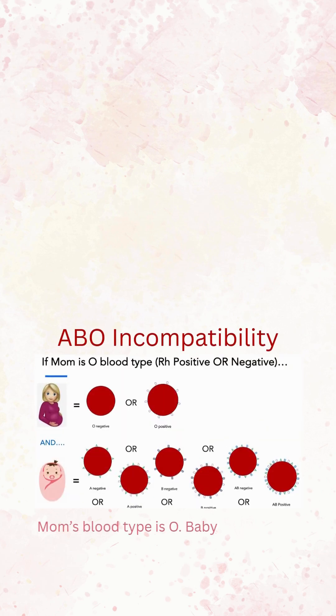With ABO incompatibility, mom's blood type is O. The baby's blood type can be anything other than O — A, B, or AB — and this is going to be true for either RH positive or RH negative. So mom could be O positive or O negative.